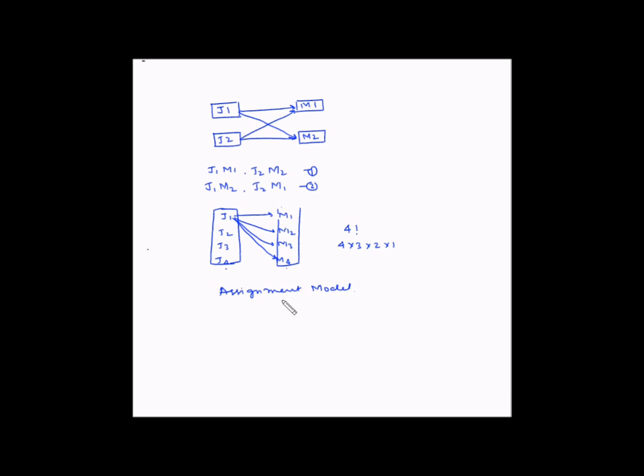The objective of the problem is to determine which source should supply one unit to which destination so that the total cost is minimum. The main objective finally is the total cost should be minimized.